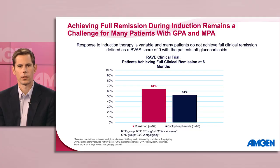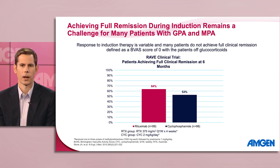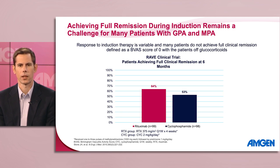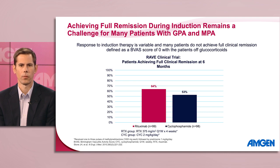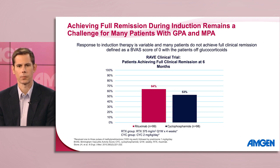After a diagnosis is made, we can then work towards achieving remission with induction. However, for many patients with GPA and MPA, achieving full remission during induction remains a challenge. Response to induction is variable, and many patients do not achieve full clinical remission within six months of initiating therapy. This was demonstrated in the RAVE clinical trial, where 36% and 47% of patients failed to show full clinical remission off glucocorticoids at six months after an induction regimen of rituximab or cyclophosphamide respectively.